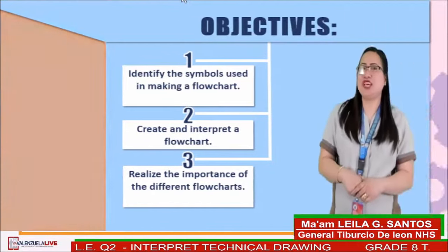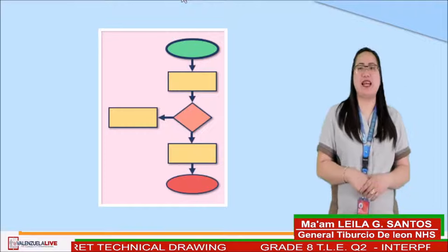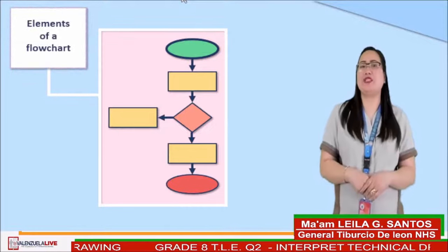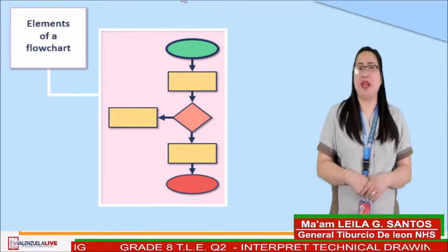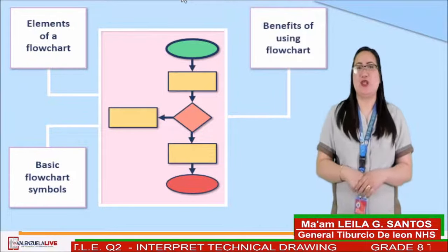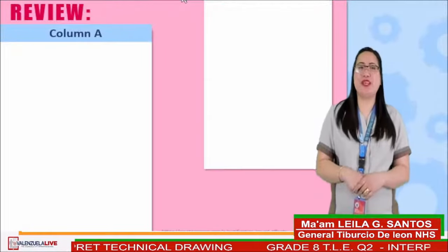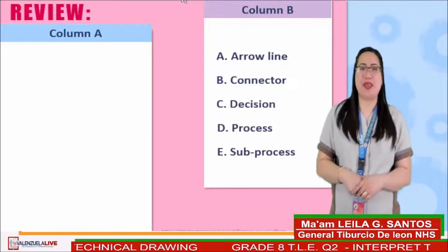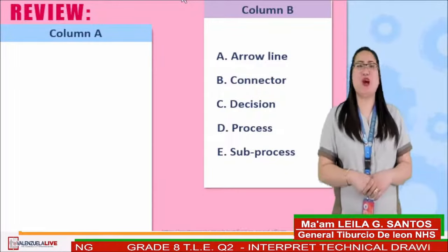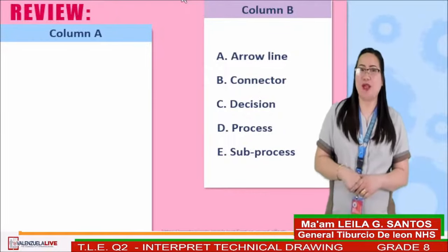Before we proceed with today's lesson, let us have a glimpse of what we discussed last meeting under the following major concepts: elements of a flowchart, basic flowchart symbols, and the benefits of using flowchart. Let us try to work on this review activity. Match the description of an element of a flowchart in column A to column B. You can type or key in the letter of your answer in the comment box.